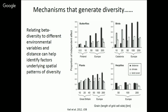Just to give you a sense of beta diversity and what people have done with it, this is a very nice paper that demonstrates that you can relate beta diversity to different environmental variables and distance. This can help start to understand or identify the factors underlying spatial patterns of beta diversity. If you focus on birds and look in Europe versus Catalonia, you can see that distance influences beta diversity at the scale of Europe, while land cover and other factors seem to predominate at a smaller spatial scale.